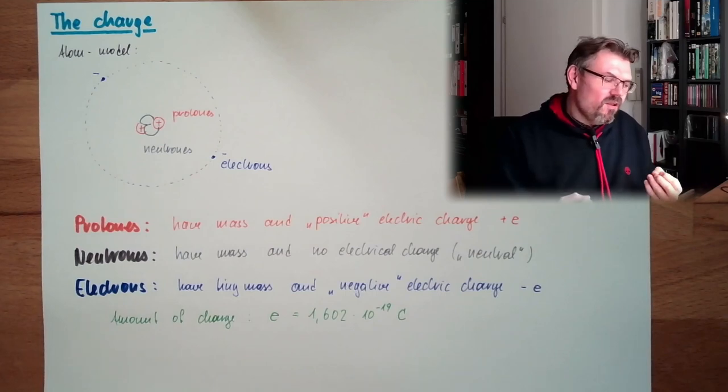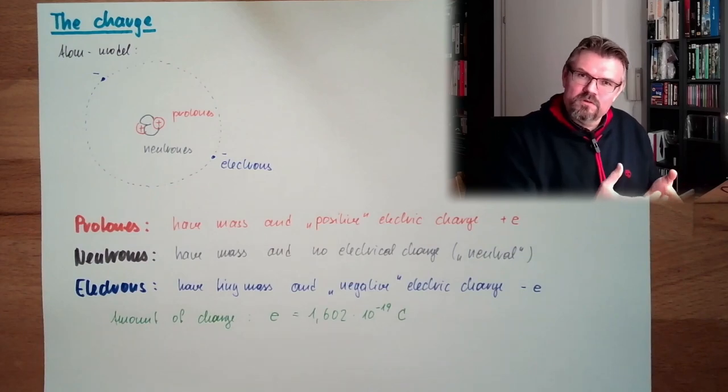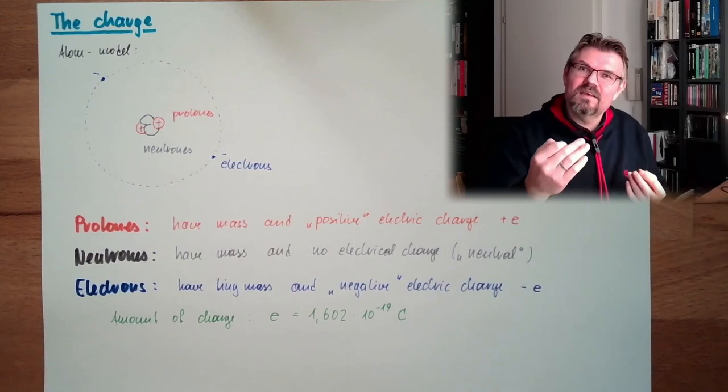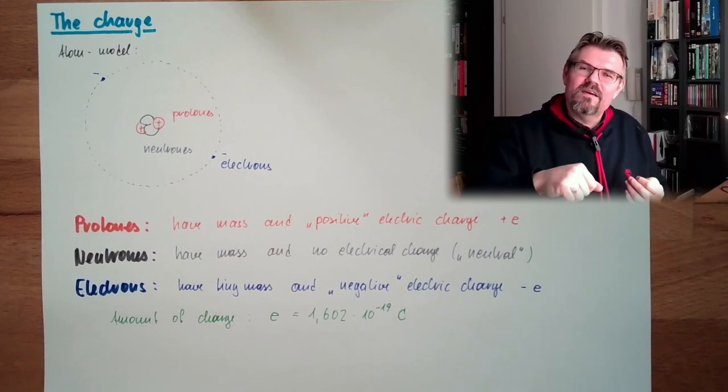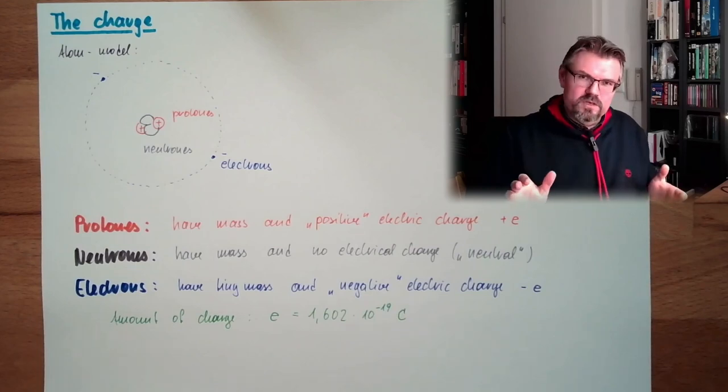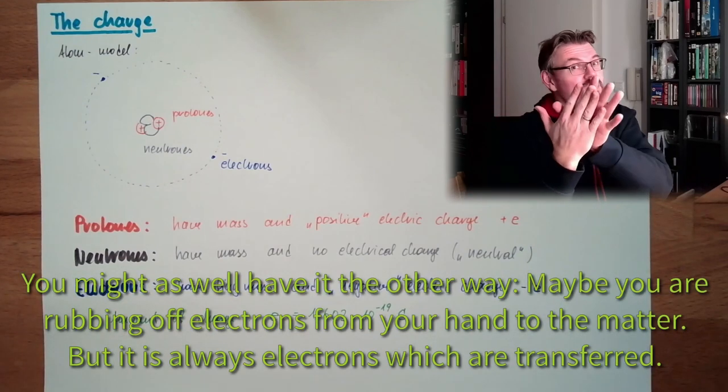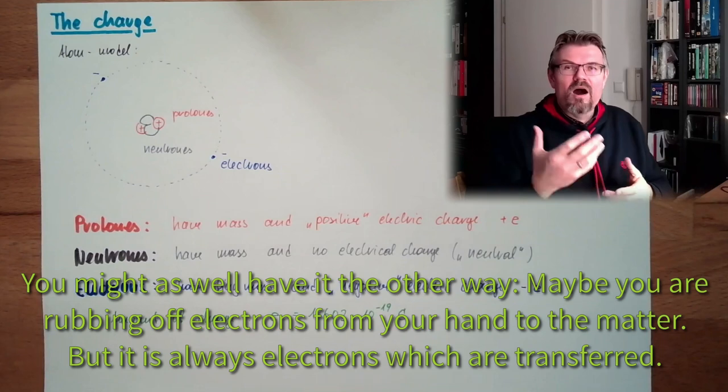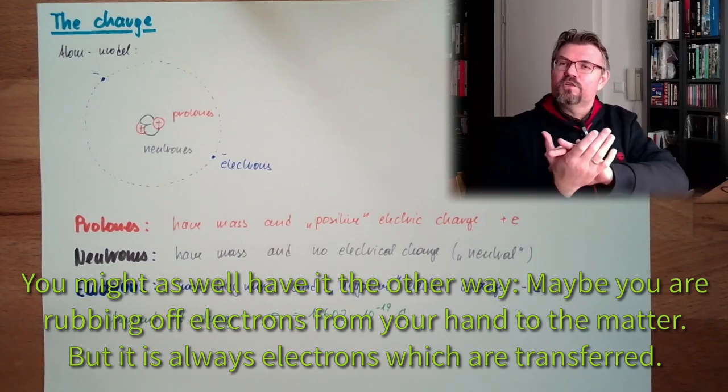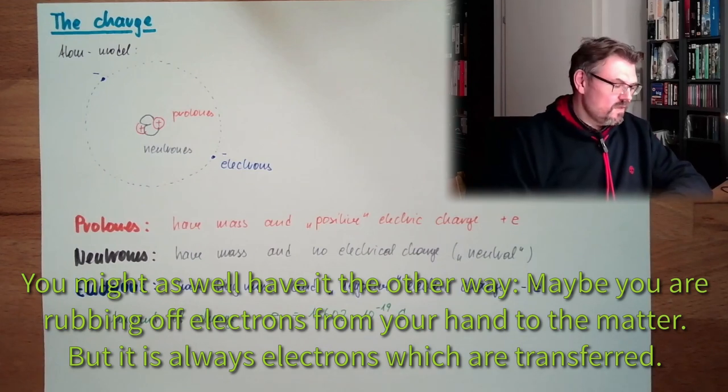Now we have less electrons than protons inside there. You cannot wipe away protons because there is the mass. Inside the core there is the mass. You really have to physically scratch something off. You can rub away electrons usually. So you usually charge this positive. On your hand there is negative charge. You have too many electrons. If you have too few electrons, it's positively charged.